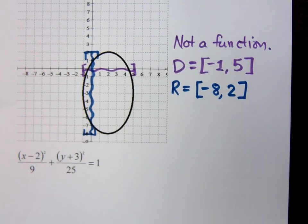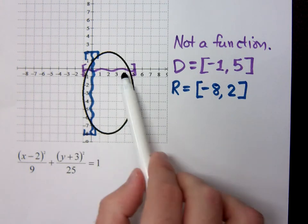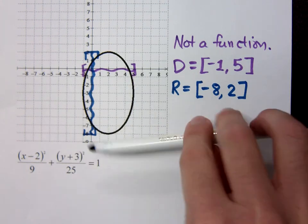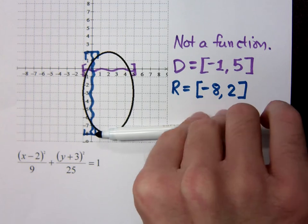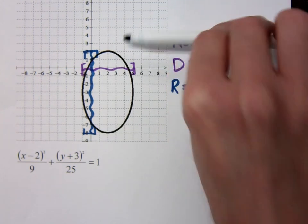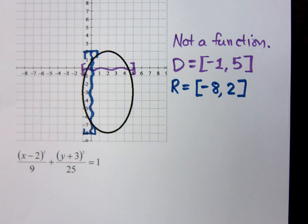Since we are describing our domain and range using interval notation, we must do it from least to greatest. Now that's easy enough when we go from left to right. When I'm talking about the range, least to greatest is from bottom to top. So you have to make sure you put it in the correct order.